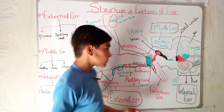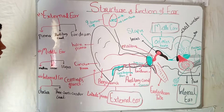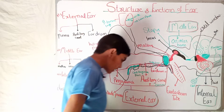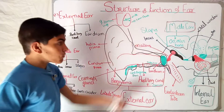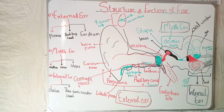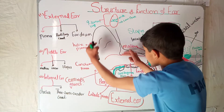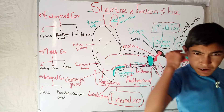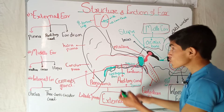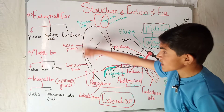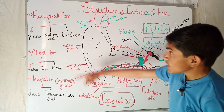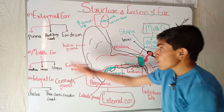Our ear can be divided into three parts: external ear, middle ear, and internal ear. Looking at this diagram, the outer part visible to the naked eye is the external ear. The external ear consists of the pinna, and next is the outer auditory canal. The entire outer visible part is called the pinna.